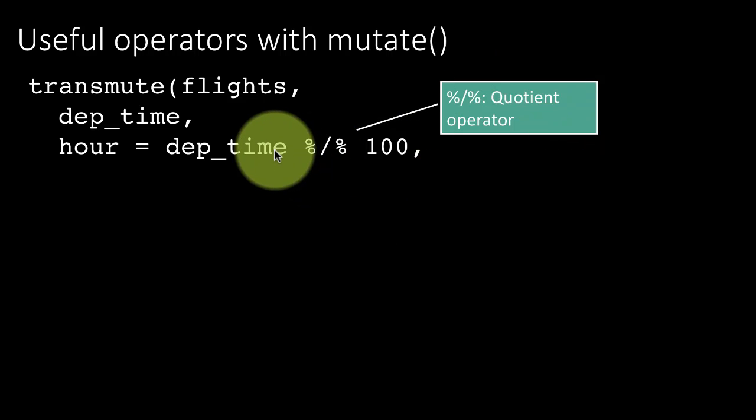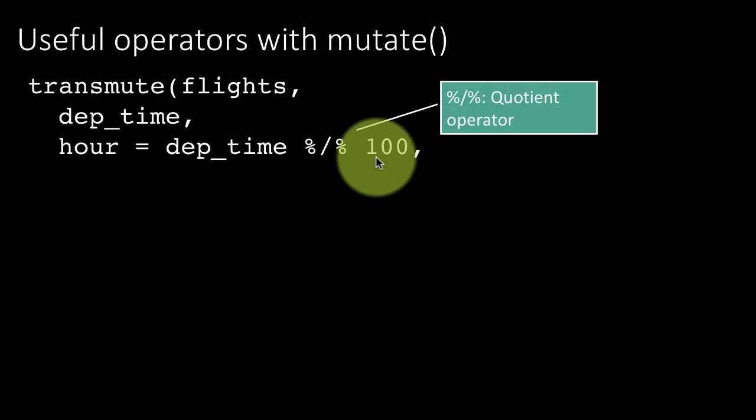So for example, suppose your time was 1030. You divided by 100 integer division. The result is 10. Right. The remaining 30 is the remainder. 1030 divided by 100 is 10 remainder 30.